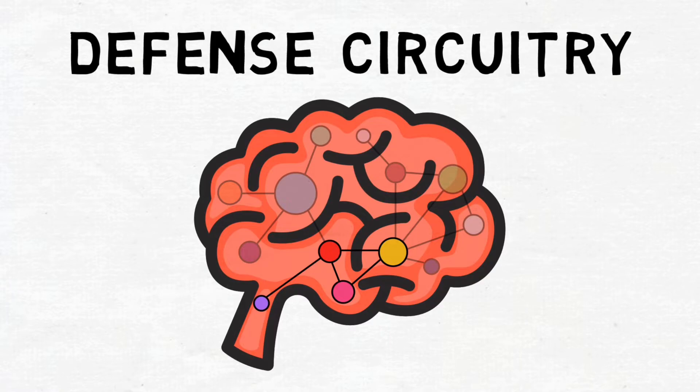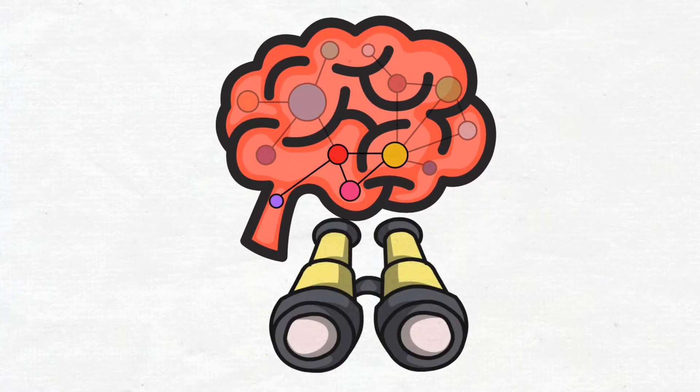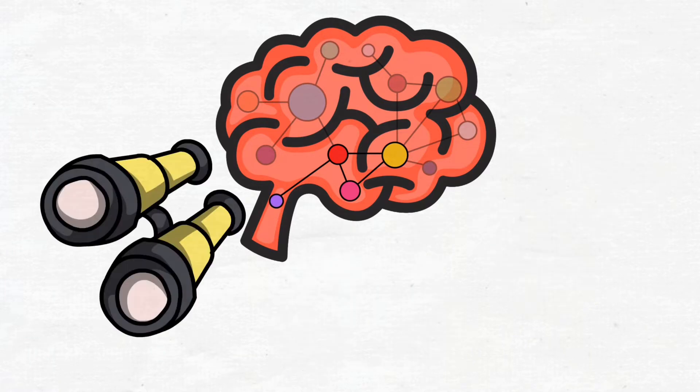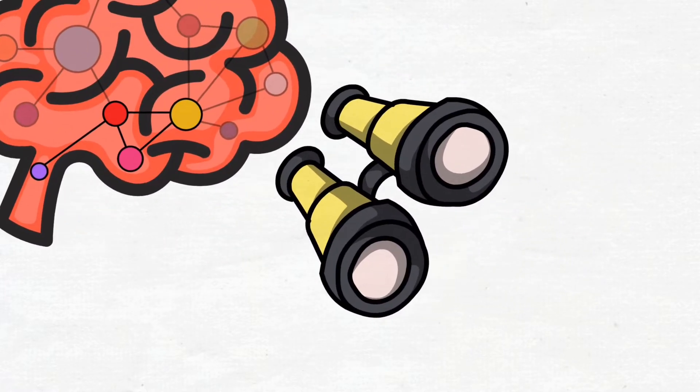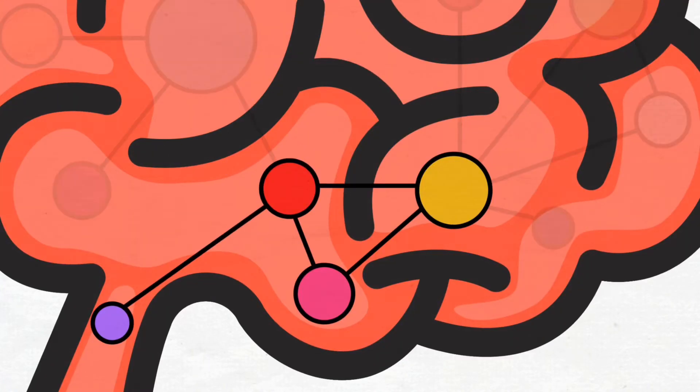An important thing about the defense circuitry is that it's always on and always, automatically and outside of awareness, scanning for danger. And the moment an attack is detected, the defense circuitry quickly dominates brain functioning.